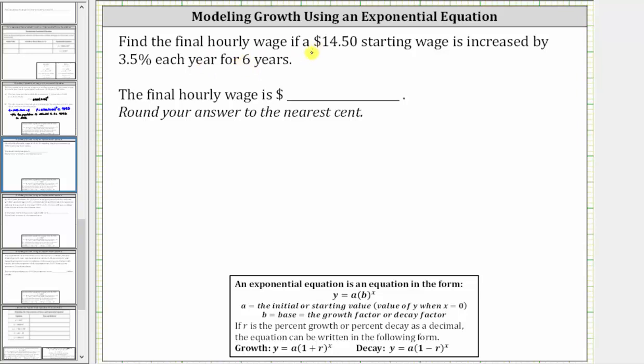To determine the final hourly wage, we'll have to write an equation relating the hourly wage to the time in years. And because the hourly wage is increasing by a constant percentage each year, we will have an exponential equation in the form y equals a times b raised to the power of x.